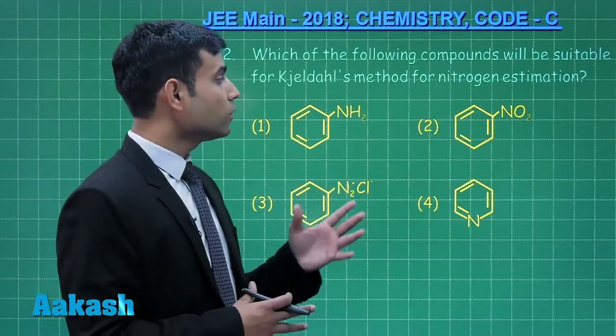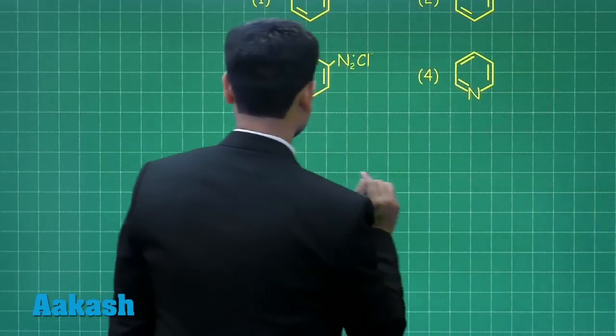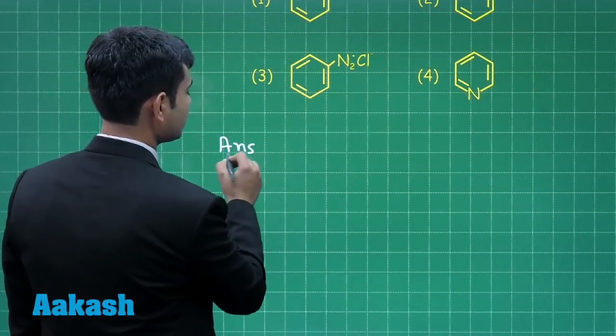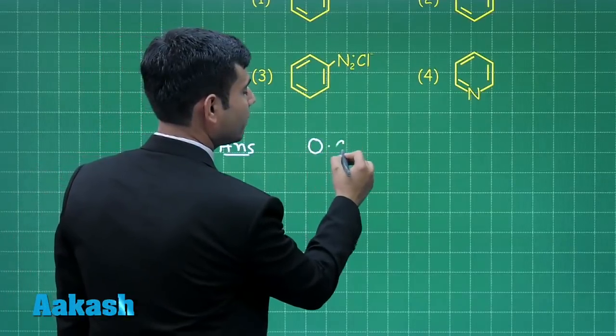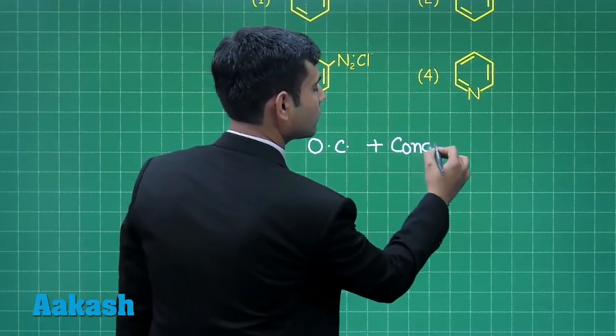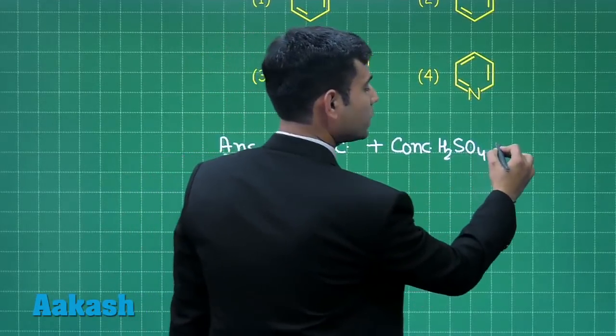In Kjeldahl's method, we have the organic compound and add concentrated H2SO4. This gives us ammonium sulphate (NH4)2SO4.